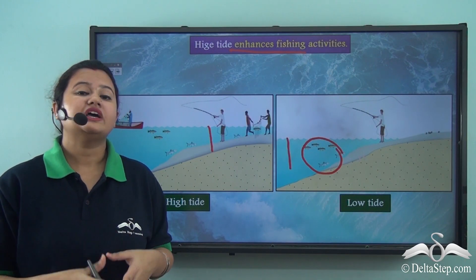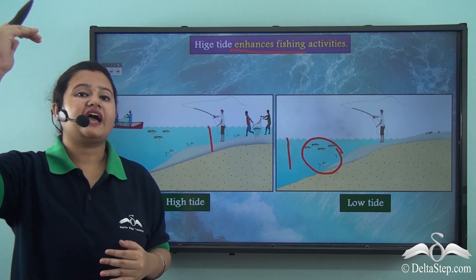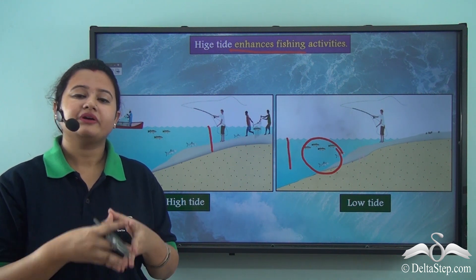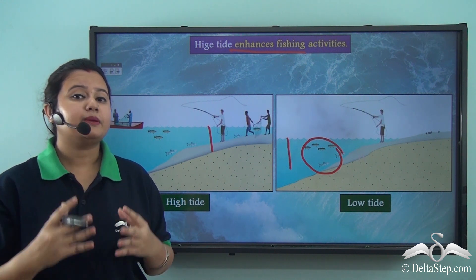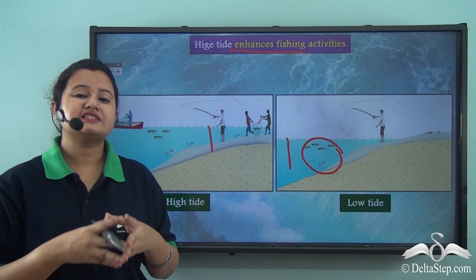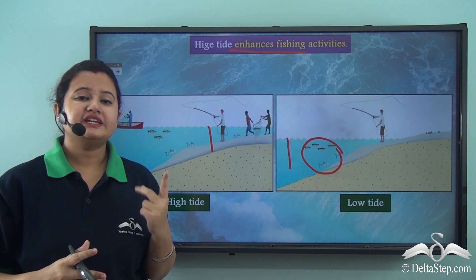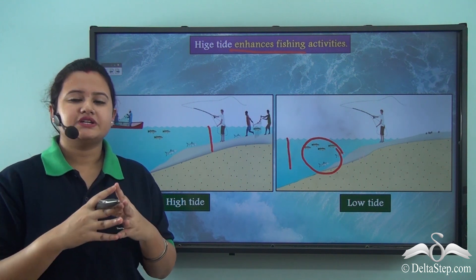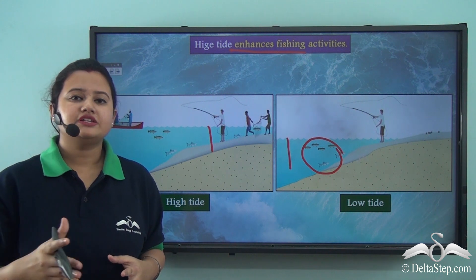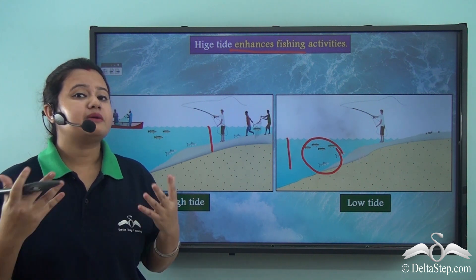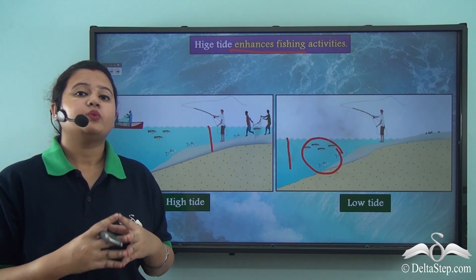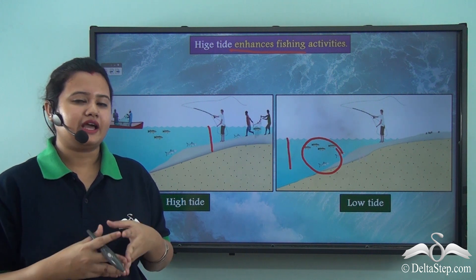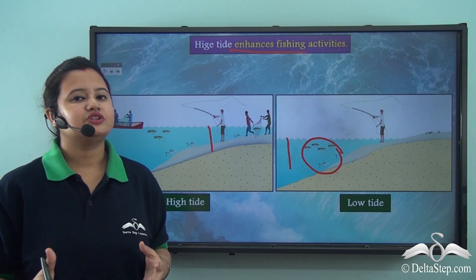In today's lesson we first understood the meaning of tide — the alternate rise and fall in the level of a water body, mainly caused by the gravitational pull of the moon. The sun also plays an important role, and on this basis tides are differentiated into two types: spring tide, which occurs when the sun, moon, and earth are in a straight line, and neap tide, which occurs when they are in a perpendicular position. Finally, we discussed the importance of tides: they provide renewable tidal energy, aid navigation, and support fishing activities.